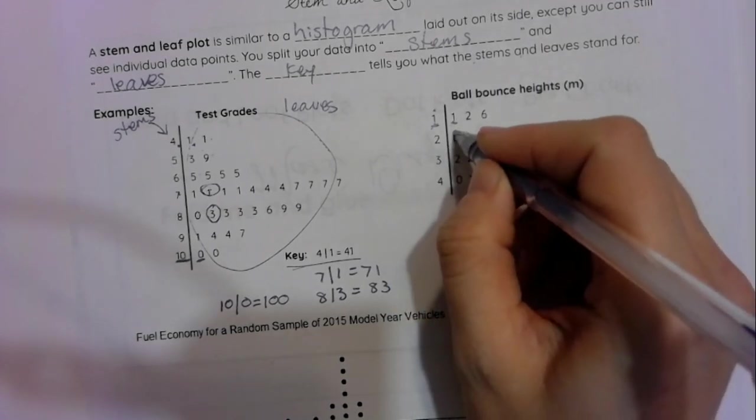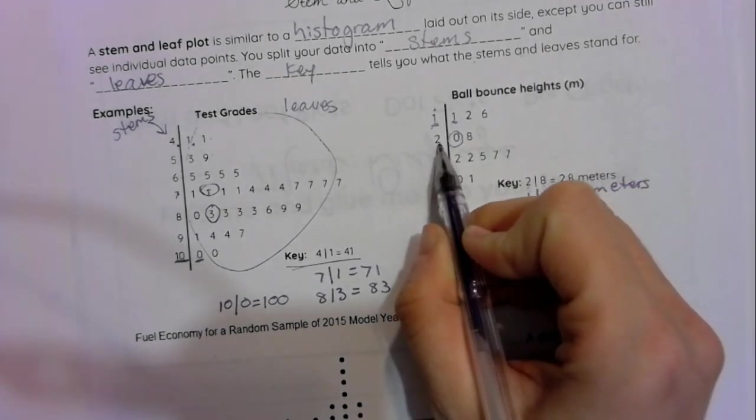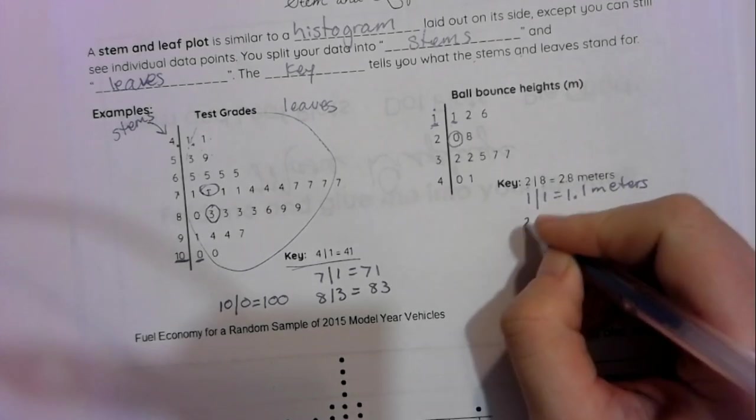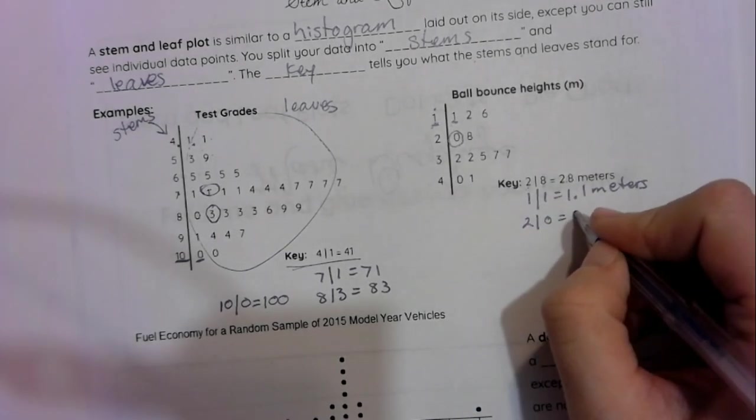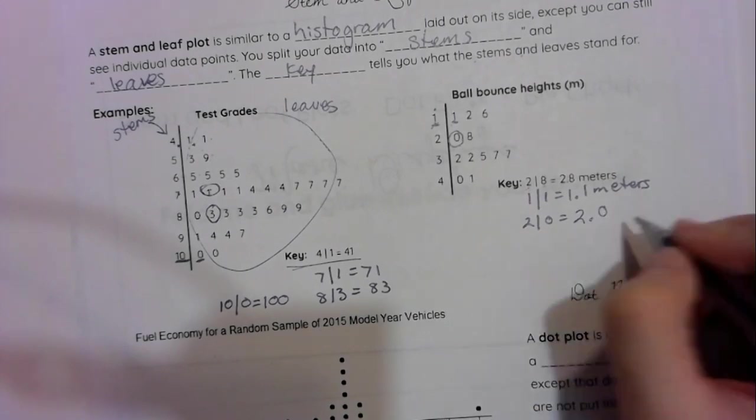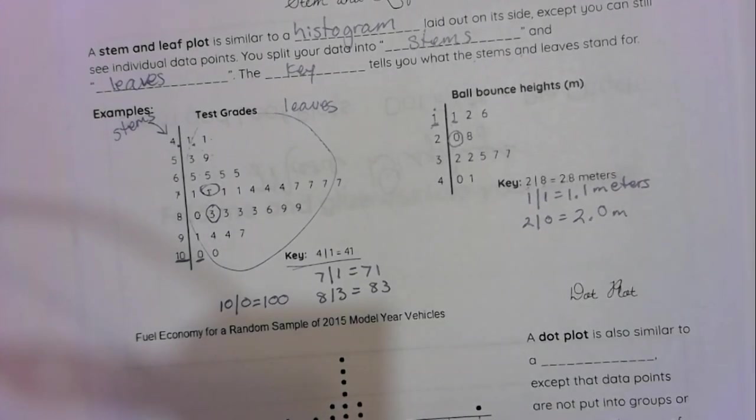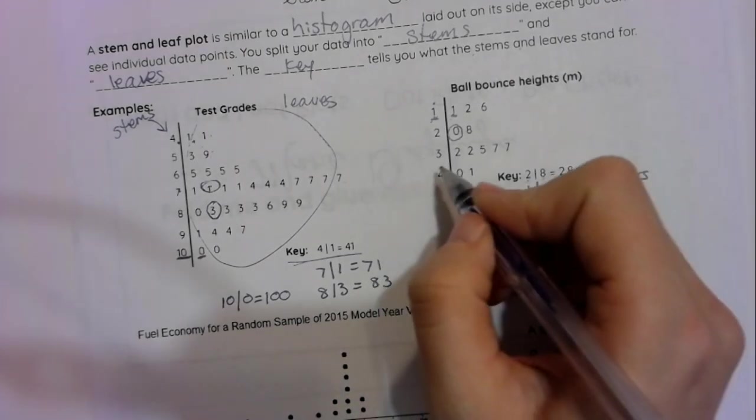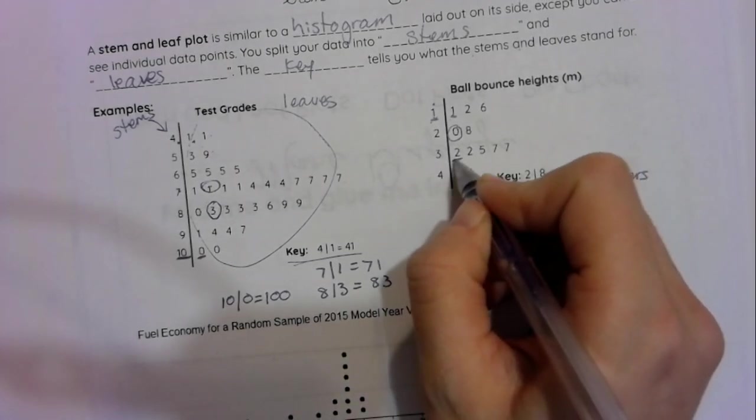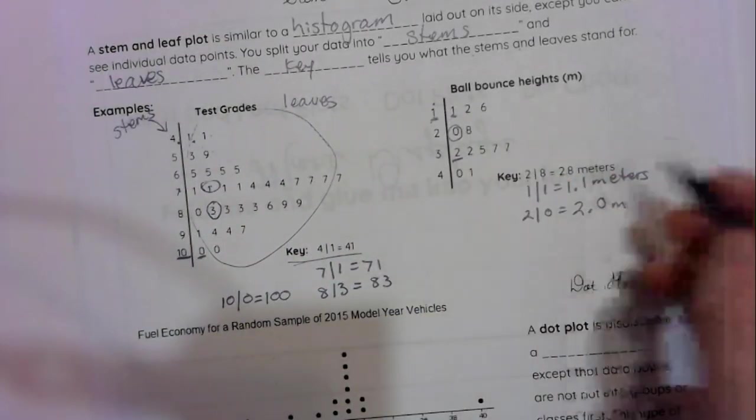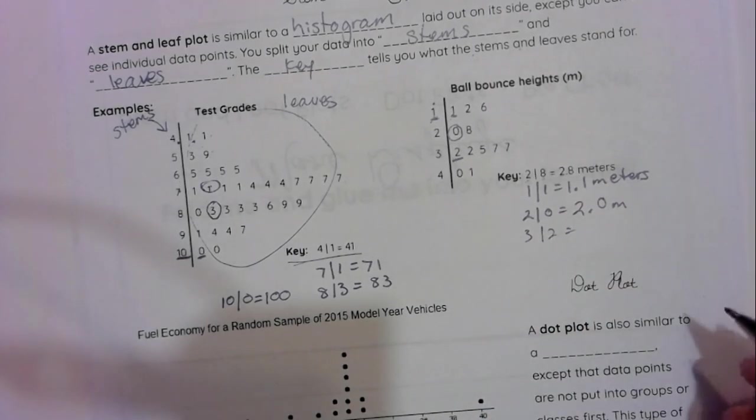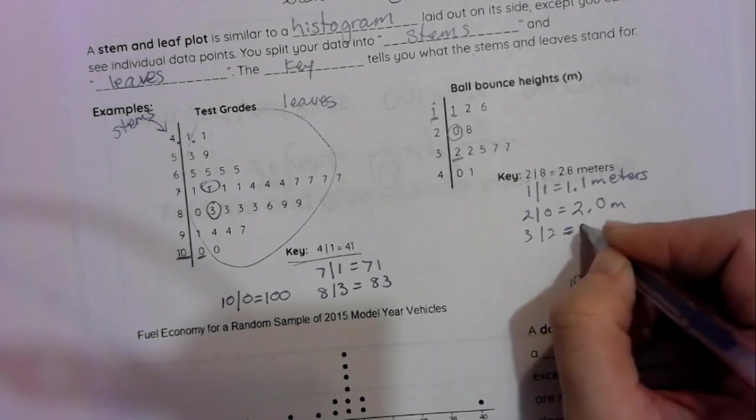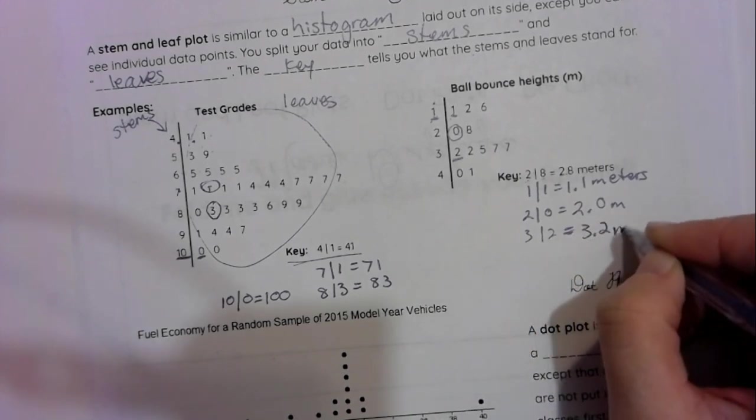Or if I had, well, this right here, two as a stem, zero as a leaf. Hopefully you said that would be 2.0 meters. And then think about this one. What about this right here? Three is your stem and two is the leaf. And hopefully you said 3.2 meters.